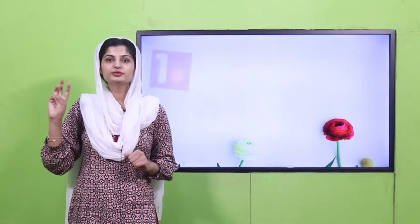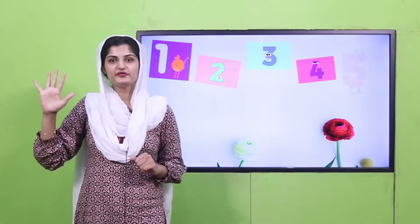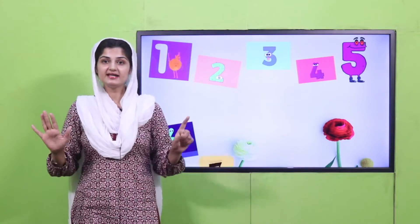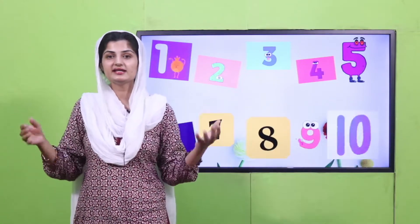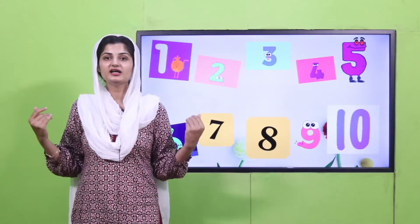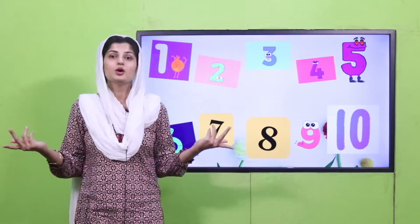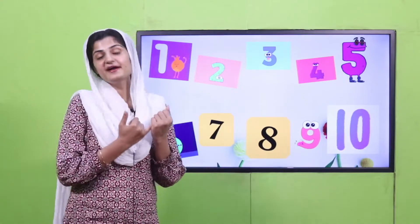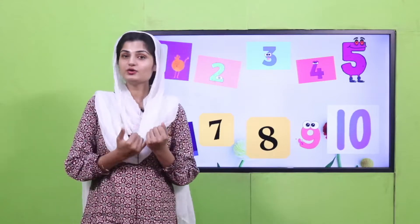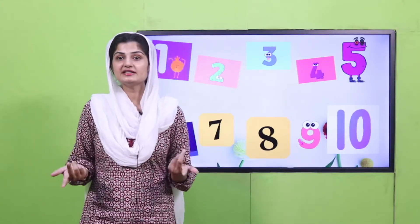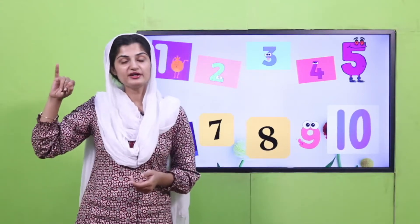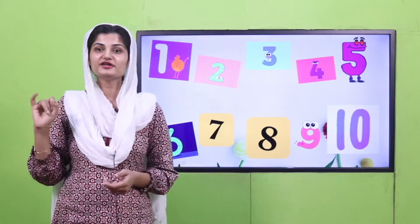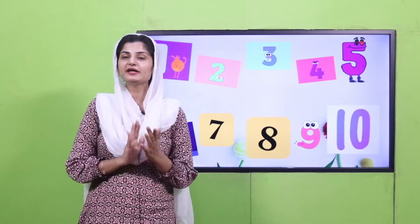One, two, three, four, five — once I caught a fish alive. Six, seven, eight, nine, ten — then I let it go again. Why did you let it go? Because it bit my fingers so. Which finger did it bite? This little finger on my right. This little finger on my right. Excellent playgroup!